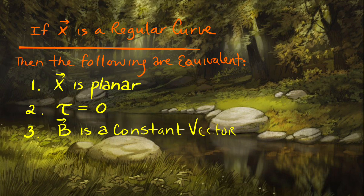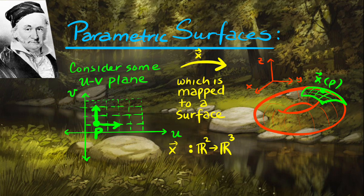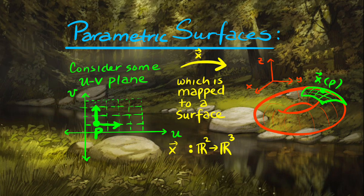If x is a regular curve — smooth and differentiable — and x is planar, then its torsion is zero (it is not lifting off the plane) and B is a constant vector. Taking all this into consideration, Carl Friedrich Gauss had the idea to parametrize a surface by mapping a two-dimensional uv-plane onto a three-dimensional surface, creating a parametrization of a surface in the same way that you can parametrize a curve.